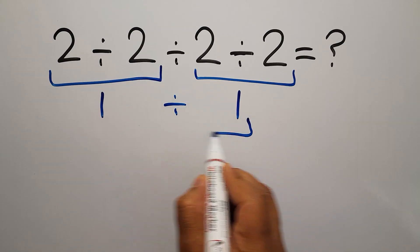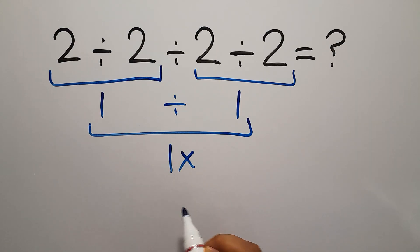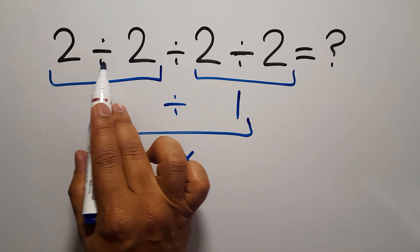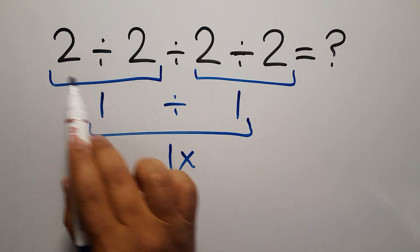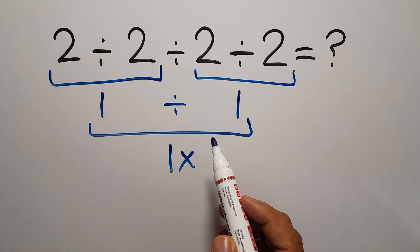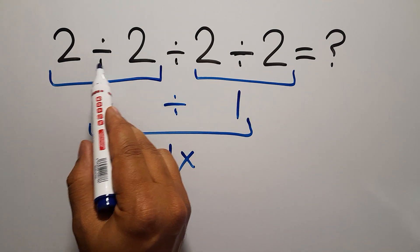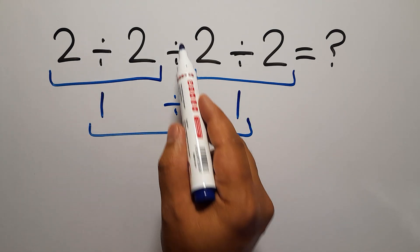But this answer is not correct because when we have more than one division in one expression, we have to work from left to right. So first we have to do this division, then this division, not this division, and finally this division.